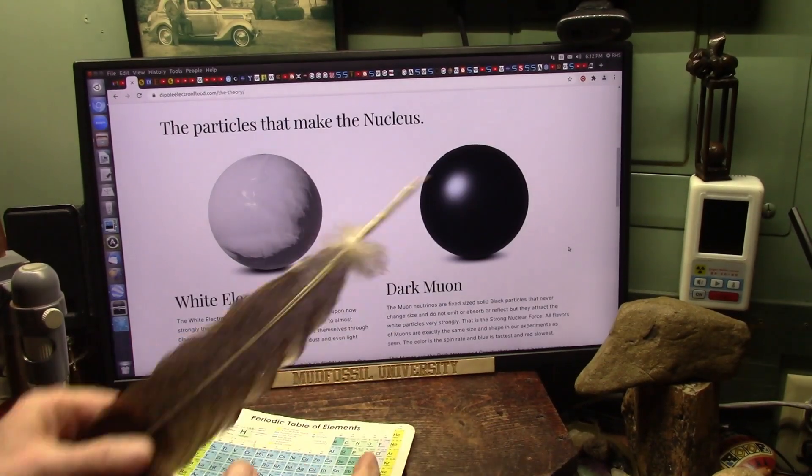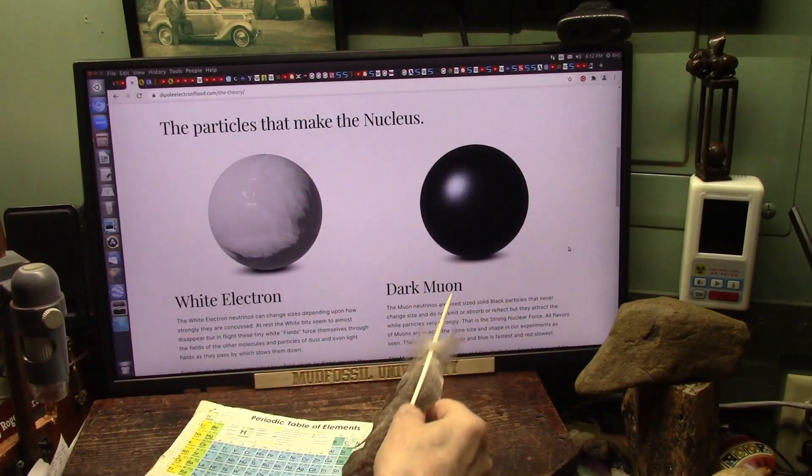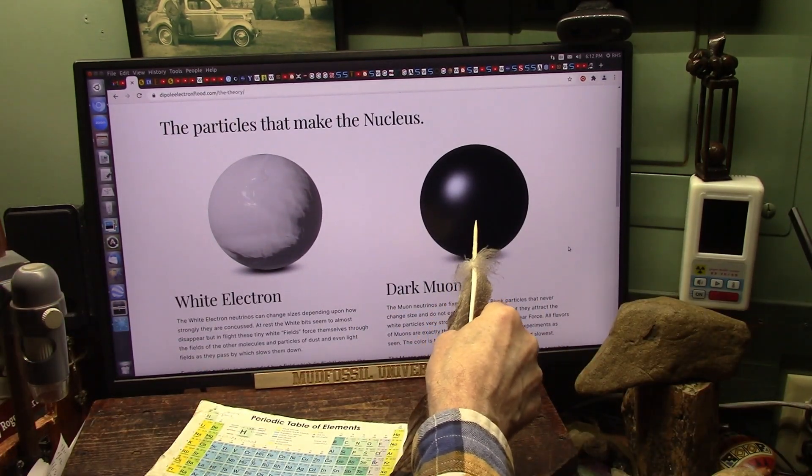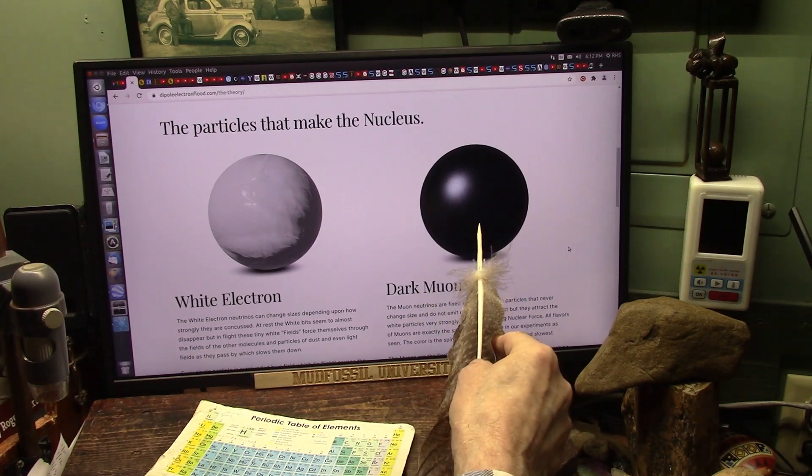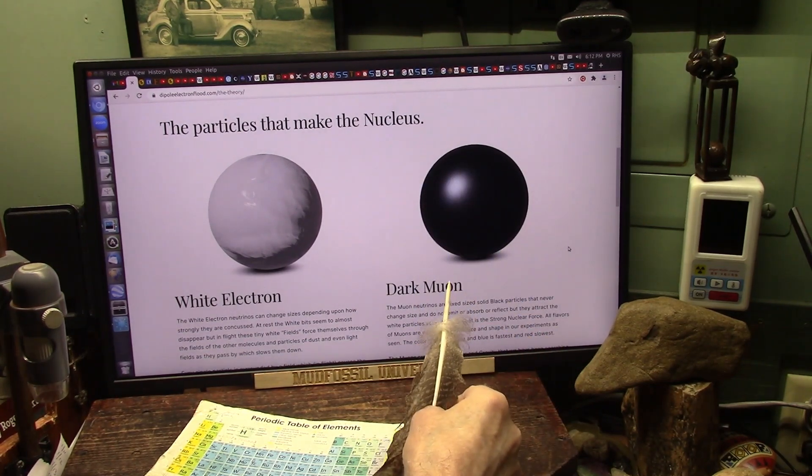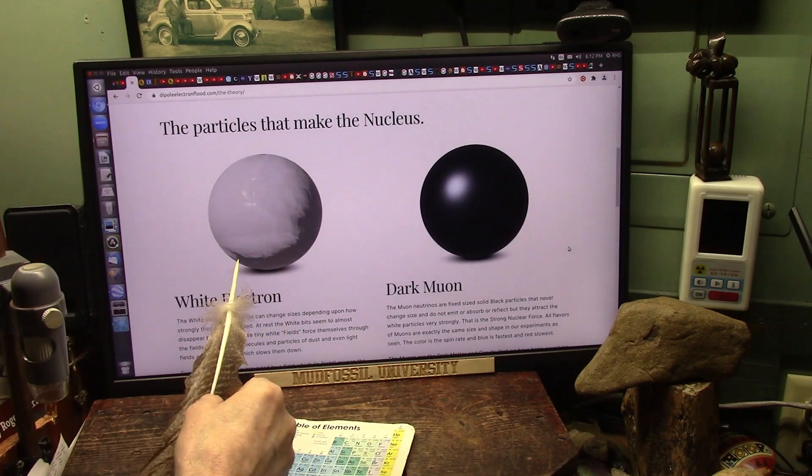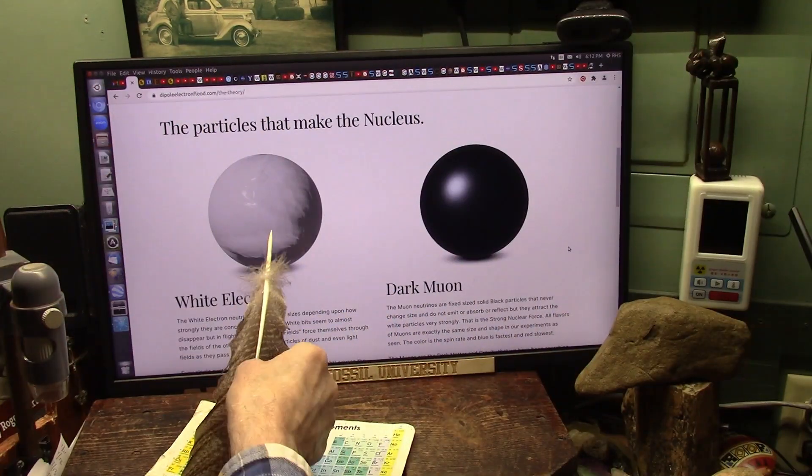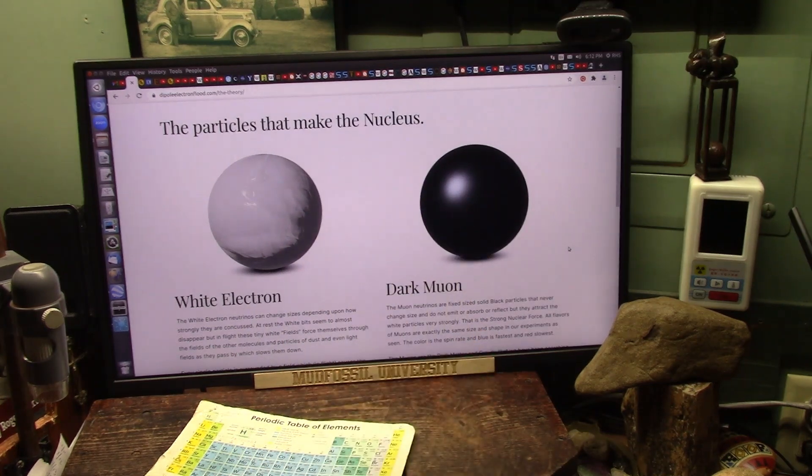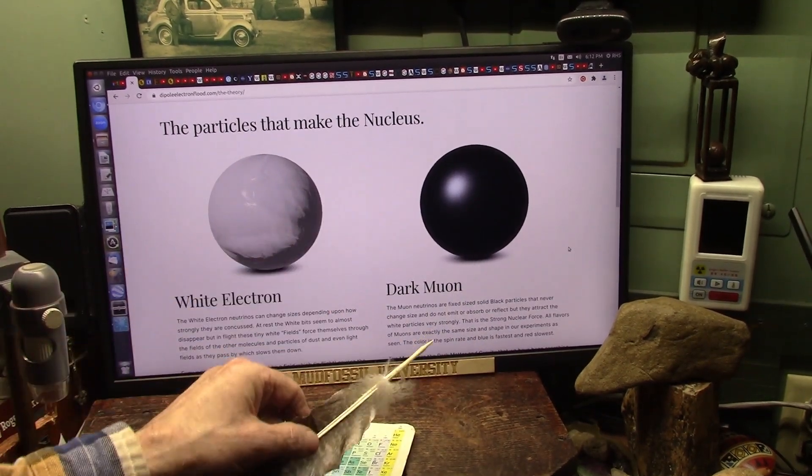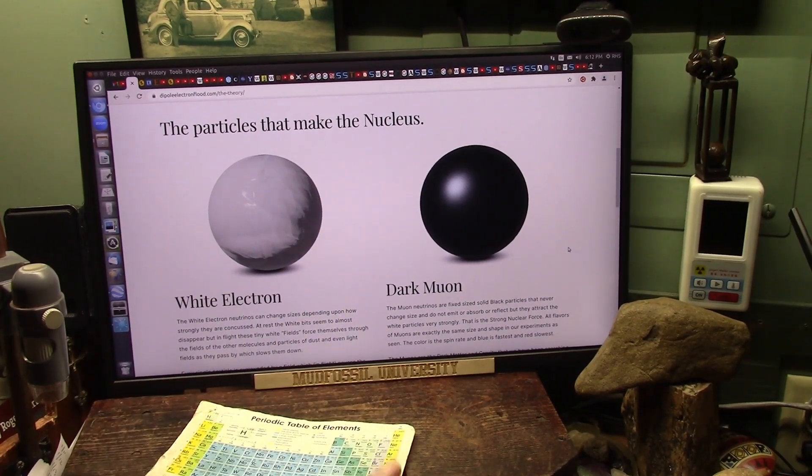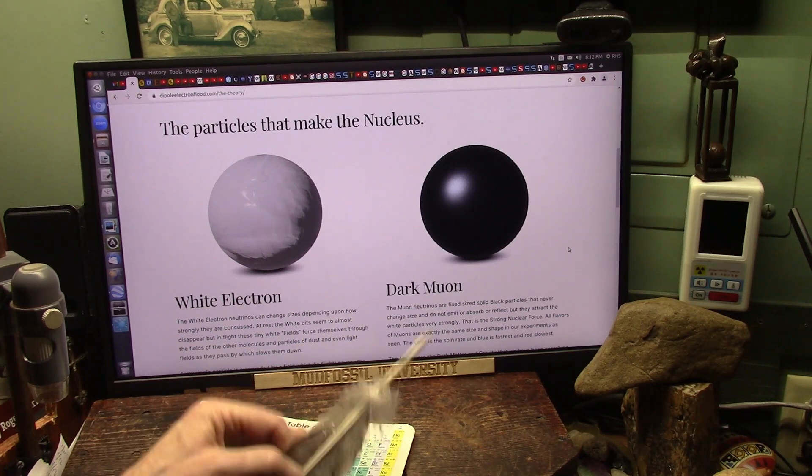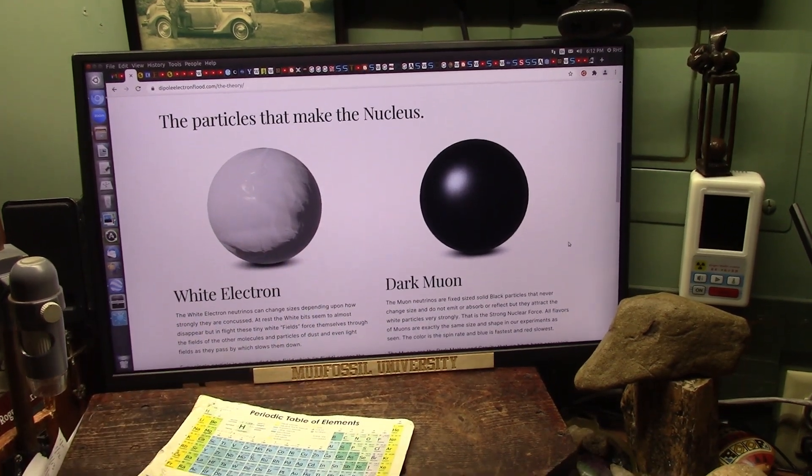In my model there's two particles that make up everything that exists. Only two. This one never ever ever changes. It's just a solid black ball and it's a dark muon. And then the electron is a white electron. It can get big, it can get small. It has no mass whatsoever. That has all the mass. That's the particles that make up the nucleus. And the nucleus makes up the atoms. And the atoms make up molecules. And molecules make up matter.